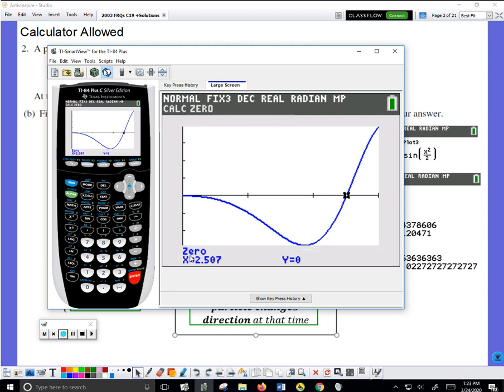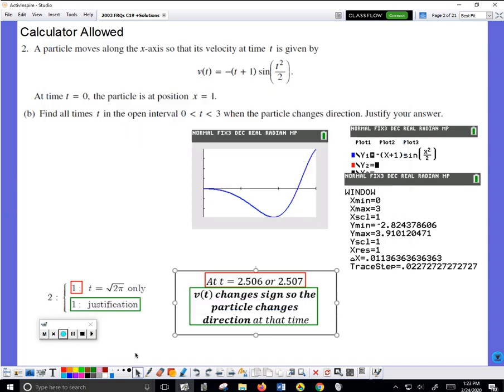I must make sure that the calculator says zero, otherwise I won't get the point. So I found the correct time, 2.507. This is what I wrote. This was worth two points. One point for finding the time, that's the red point. One point for the correct wording to get the justification. So two points total.